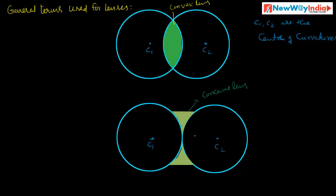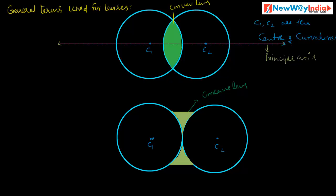Next, another important term is principal axis. The imaginary line passing through the centers of curvature of the lens is called the principal axis. This is the principal axis — it passes through the centers of curvature of the lens, for both convex and concave lenses.